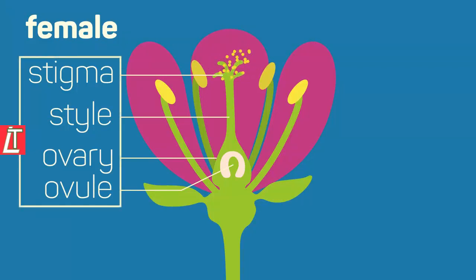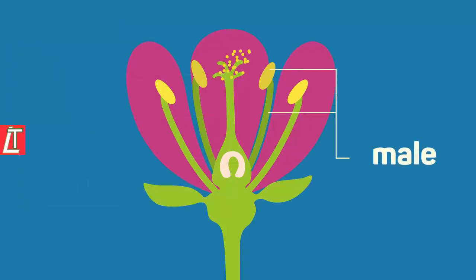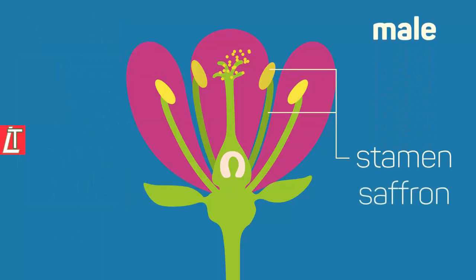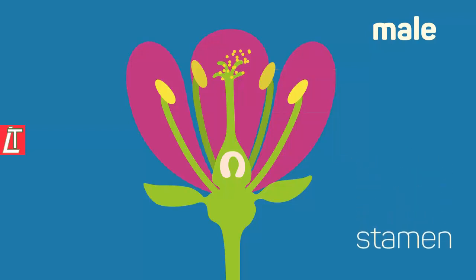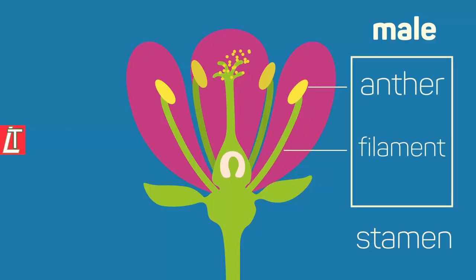The female parts of the plant together are called a pistil. The male part of the flower is the stamen. Saffron, the most expensive spice in the world, is the stamens of crocus flowers. The anther is where pollen is produced and the filament holds the anther up.